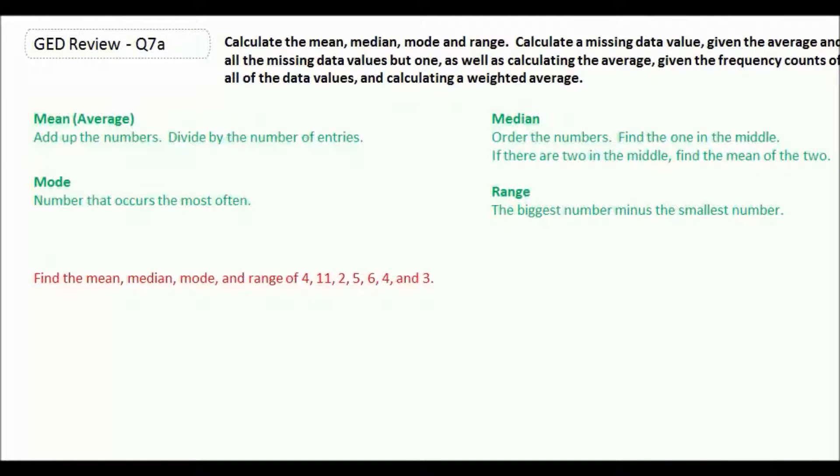The four main measures of central tendency are mean, median, mode, and range. When you hear the word average, that's talking about the mean. You add up the numbers and divide by however many numbers you had. The median is the middle number. You need to order your numbers and then find the one in the middle.